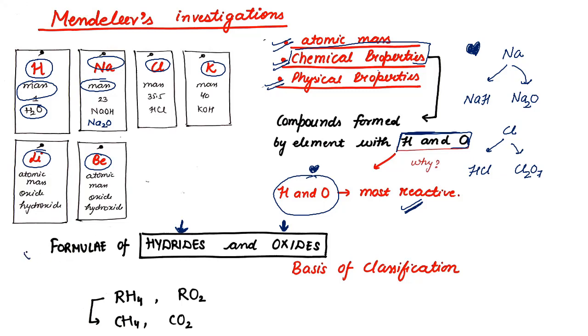This is one mark CBSE question. What was the classification of Mendeleev's investigation? You have to remember there were two things. The first consideration was given to atomic masses as I told you. But if you simply write atomic mass, you will get only half the mark. The another important thing you have to write, you have to mention is the formula of hydride and oxides formed by the element.